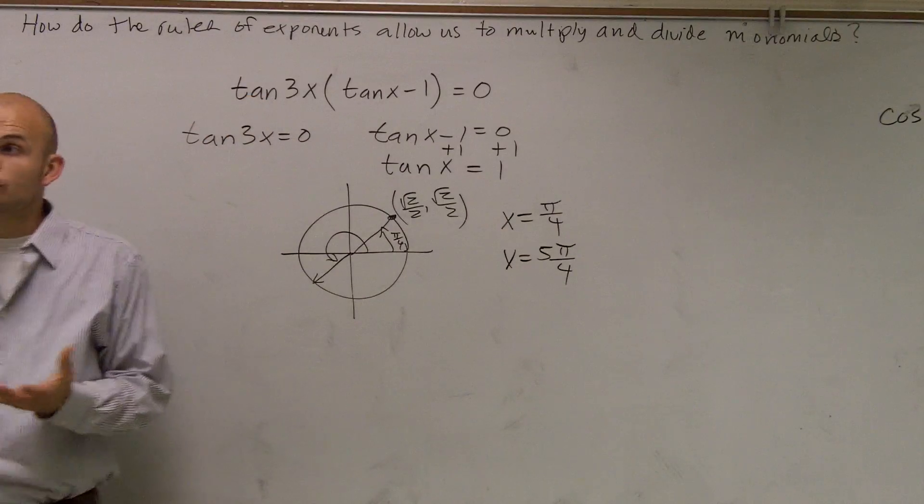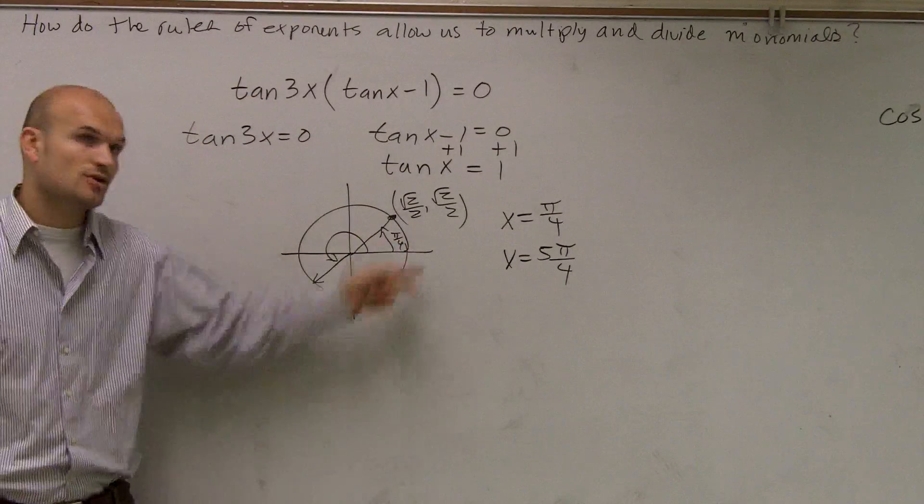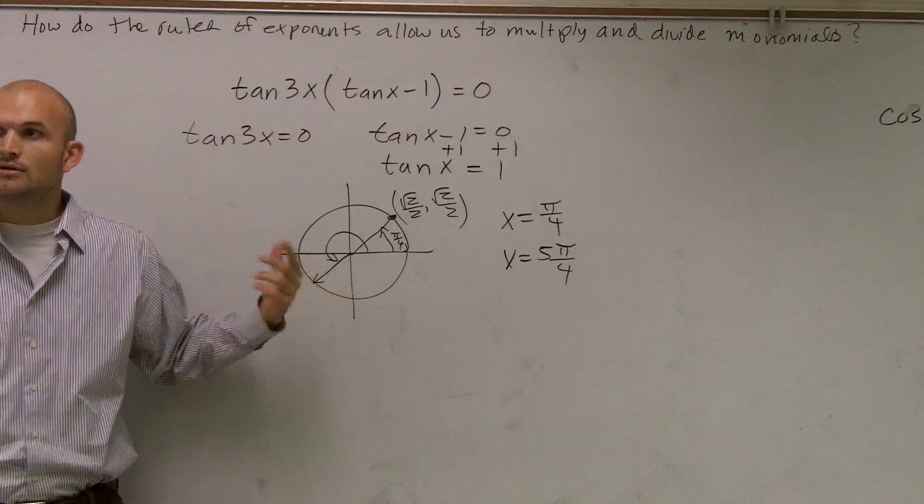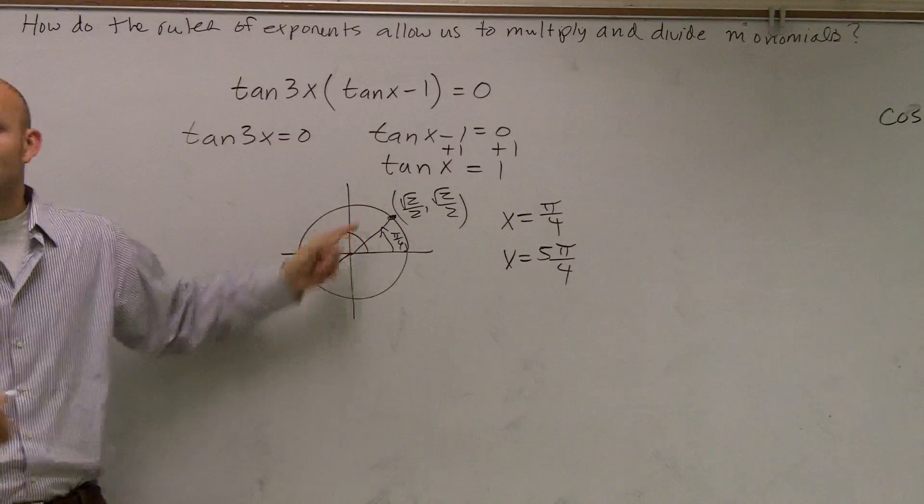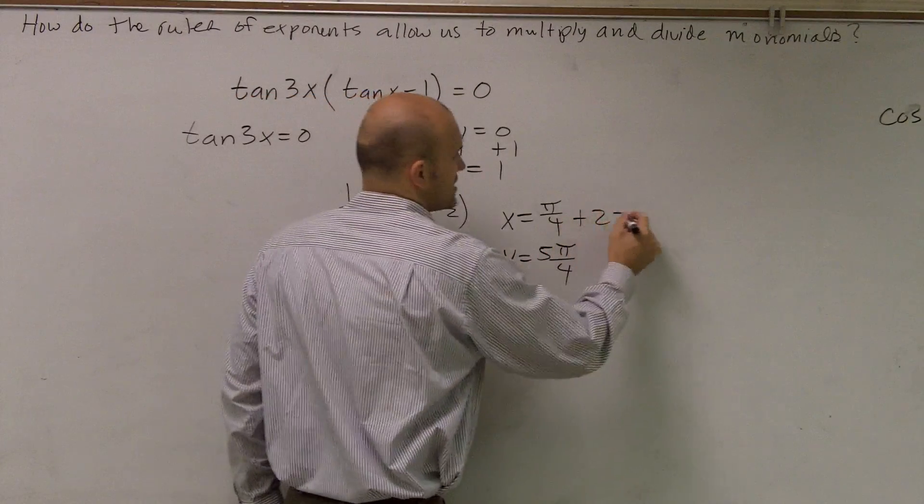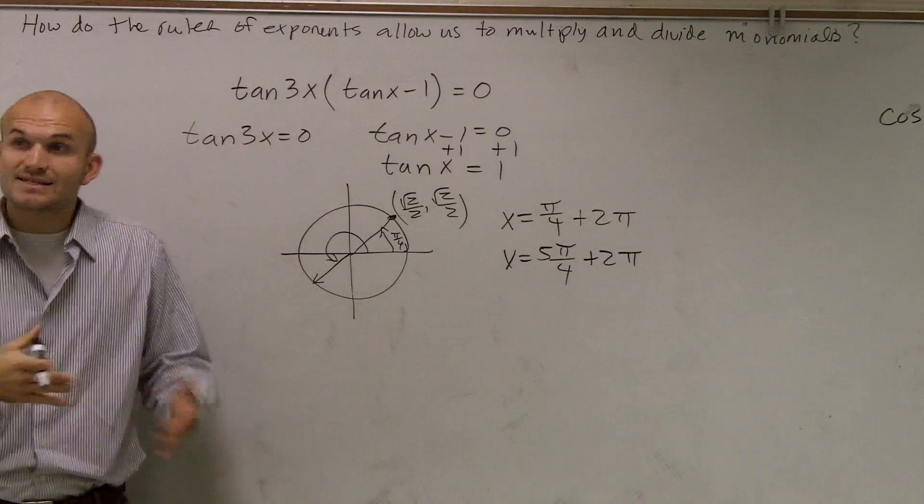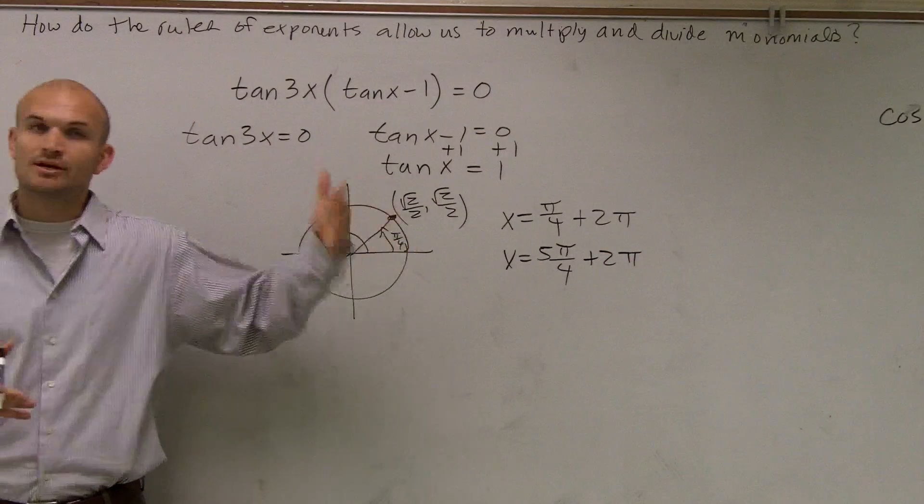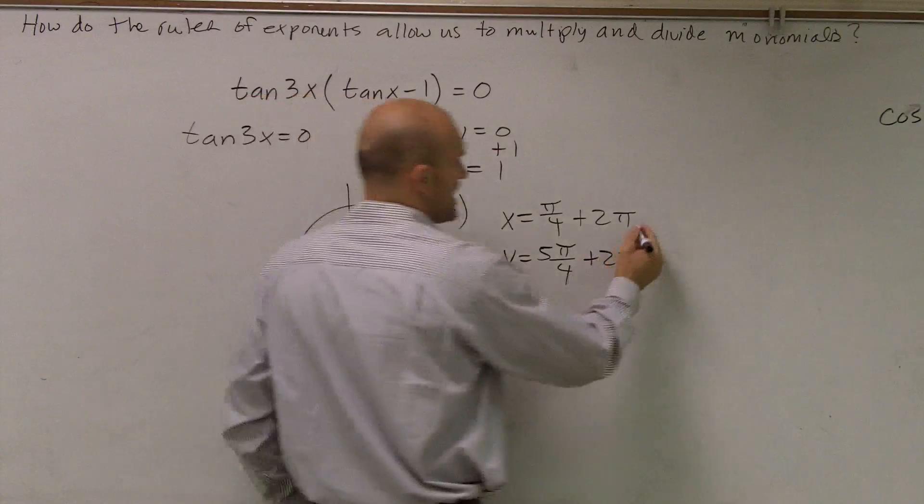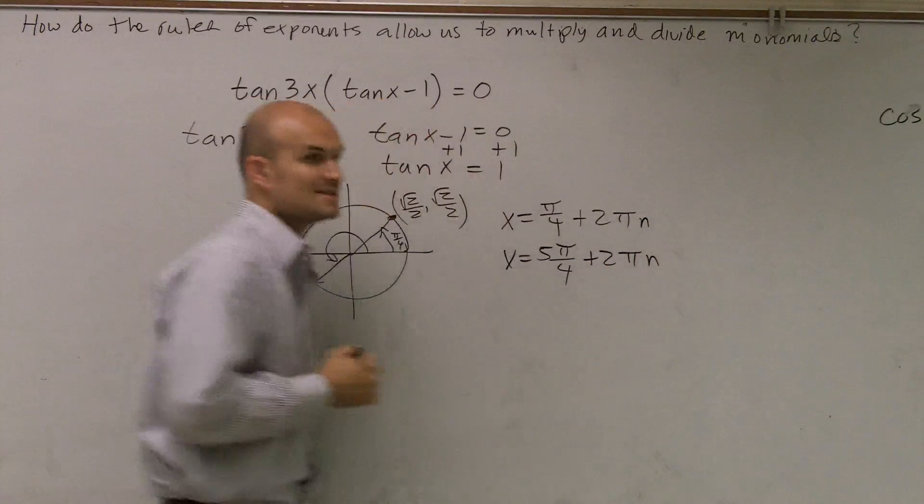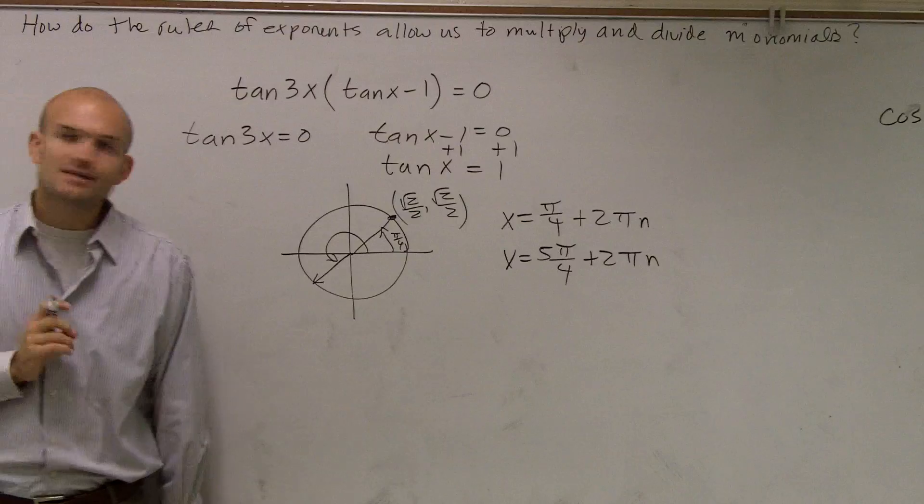Now remember, if there's no restrictions, we can keep on going around our unit circle infinite many times, which we call plus 2π, plus 2π. And since we can go around infinite many times, the number of times we go around is what we're going to call n, where n represents any integer.